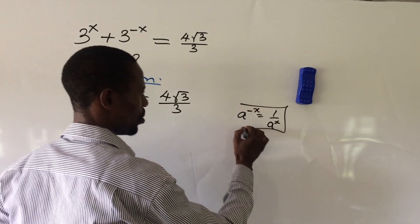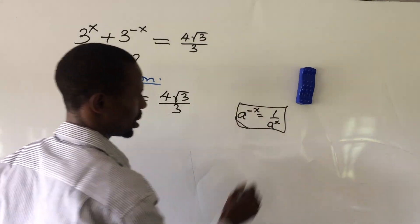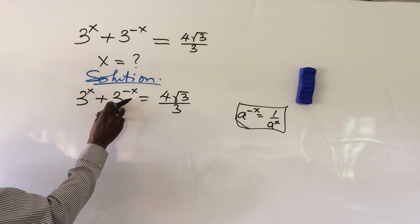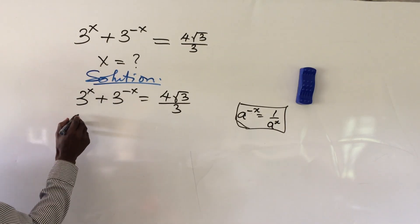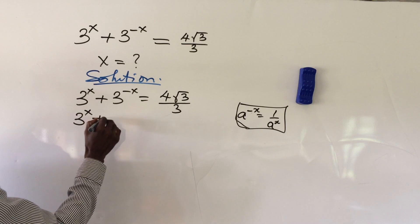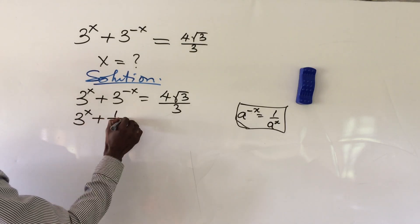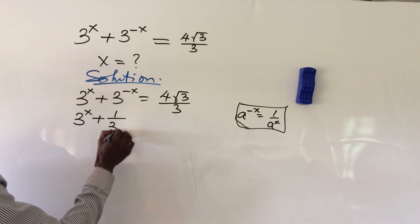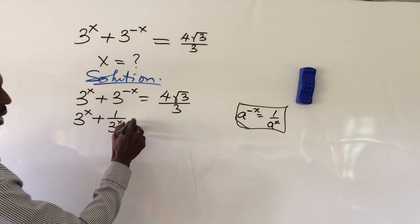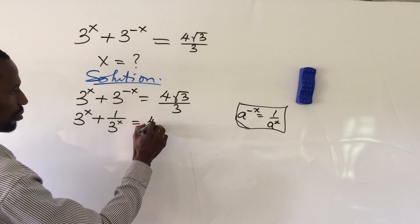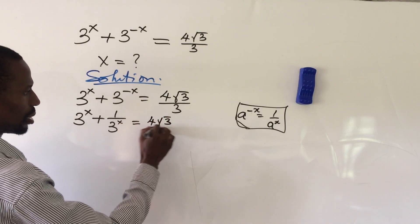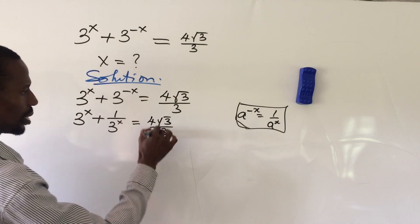So if we go by this law, we can rewrite what we have here as: 3 to the power of x plus 1 all over 3 to the power of x, equals 4 root 3 all over 3.